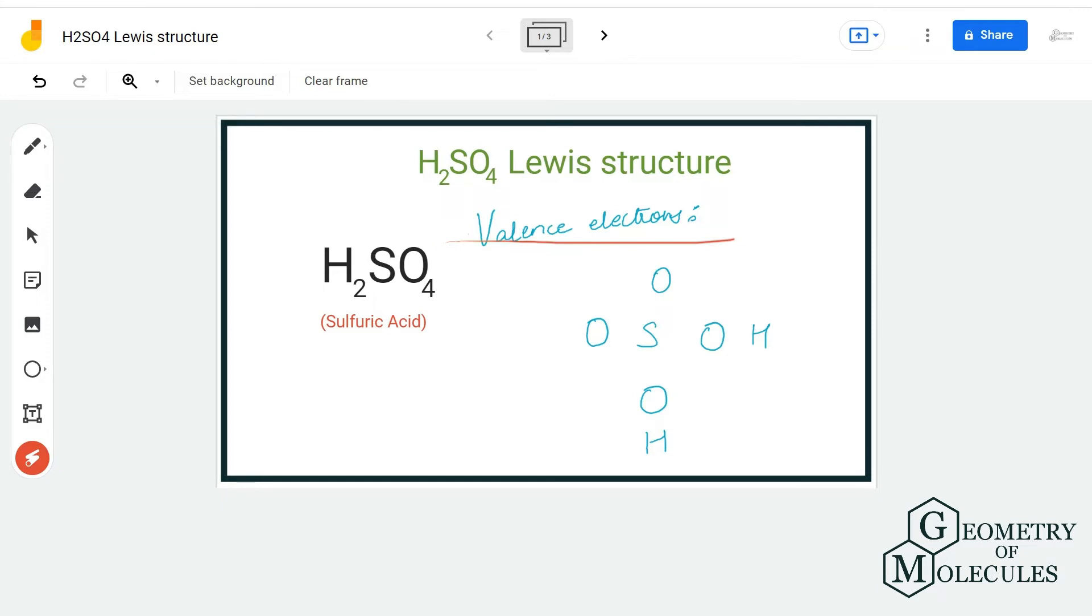Here we have two hydrogen atoms that are forming bonds with this SO4 group, and each hydrogen atom has one valence electron in its outer shell. Sulfur and oxygen both have six valence electrons in their outer shell, so we have a total of 32 valence electrons for this molecule.